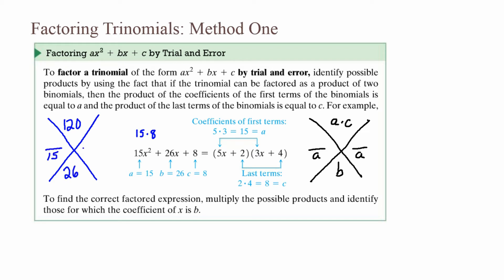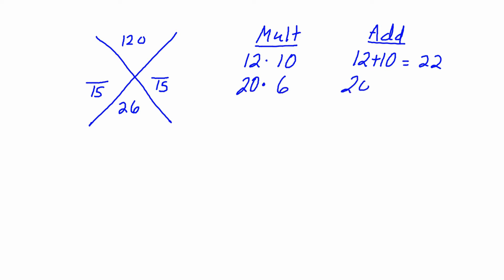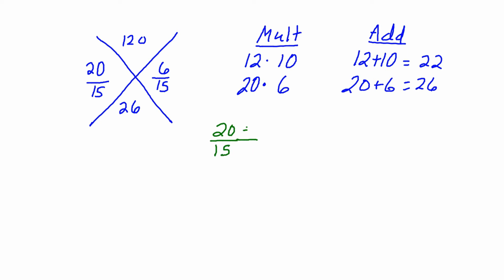Then divide by 15 and find two factors of 120 that add to be 26. Trying 12 times 10: 12 plus 10 is 22 — that doesn't work. Trying 20 times 6: 20 plus 6 is 26, so we use 20 over 15 and 6 over 15. Reducing: 20 over 15 divided top and bottom by 5 gives 4 thirds, and 6 over 15 divided by 3 gives 2 fifths.